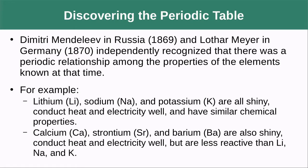The periodic table was discovered by Dmitri Mendeleev and Lothar Meyer. They were looking at elements of increasing masses and noticed that every once in a while there seemed to be a repeating pattern. Lithium and sodium have very different masses, but similar properties, and they kept noticing this repeating pattern in the properties of different elements.